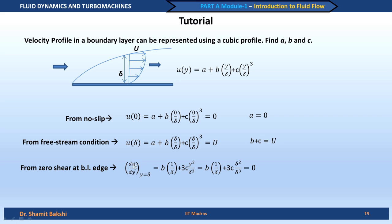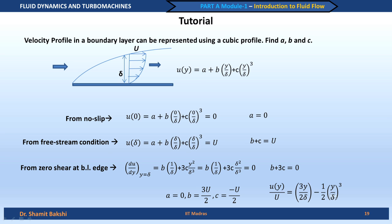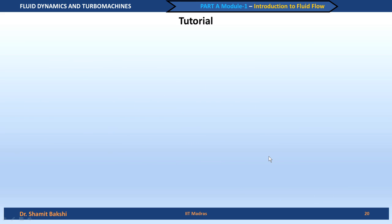If shear stress is zero at y = δ, then by Newton's law of viscosity, du/dy at y = δ must also be zero (since μ cannot be zero). Applying that condition to the cubic profile gives b + 3c = 0. Solving the two equations b + c = U and b + 3c = 0 yields the values of b and c. This problem demonstrates how to apply no-slip, free stream, and zero shear boundary conditions to determine a velocity profile.